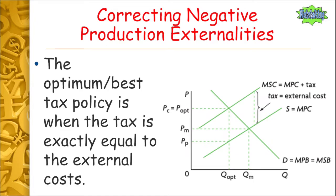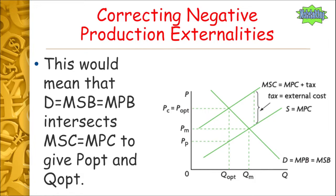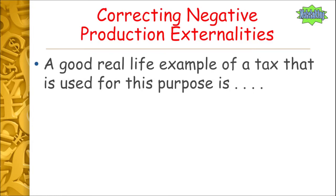The optimal tax policy is when the tax is exactly equal to the external costs. However, that isn't always possible as it's very hard to estimate the full external costs — but that would be the aim. If a tax equal to exactly the external cost is found, that would bring us to a point where demand, equal to marginal social benefit and marginal private benefit, intersects with a supply curve equal to marginal social cost and marginal private cost, giving our ideal point of P-opt and Q-opt.